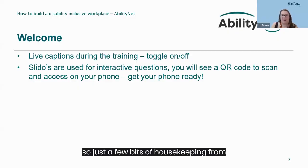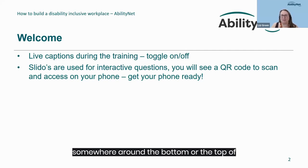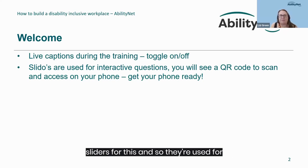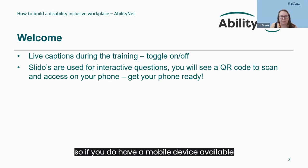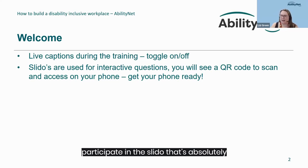Just a few bits of housekeeping: we are on Zoom today and captions are available should you require them. You can toggle these on and off depending on your platform — they'll be somewhere around the bottom or top of your screen, possibly hidden under the 'more' section. During the session we'll be inviting you to reflect on your own inclusive practices using Slido for interactive questions. You'll see a QR code when we get to the first Slido, or you can join on the web with a code. If you aren't able to access the Slidos, that's absolutely fine — it's just an opportunity to reflect.